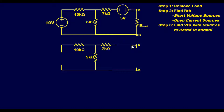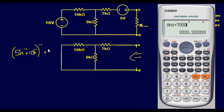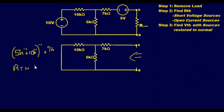Now if we had an ohmmeter between points A and B, we would read resistance. Looking in, the 10k ohm resistor and the 5k ohm resistor are in parallel, and then the 7k ohm resistor is in series with that combination. Plugging this into the calculator: (5k⁻¹ + 10k⁻¹)⁻¹ plus 7k gives us an R_thevenin of 10.33k ohms.